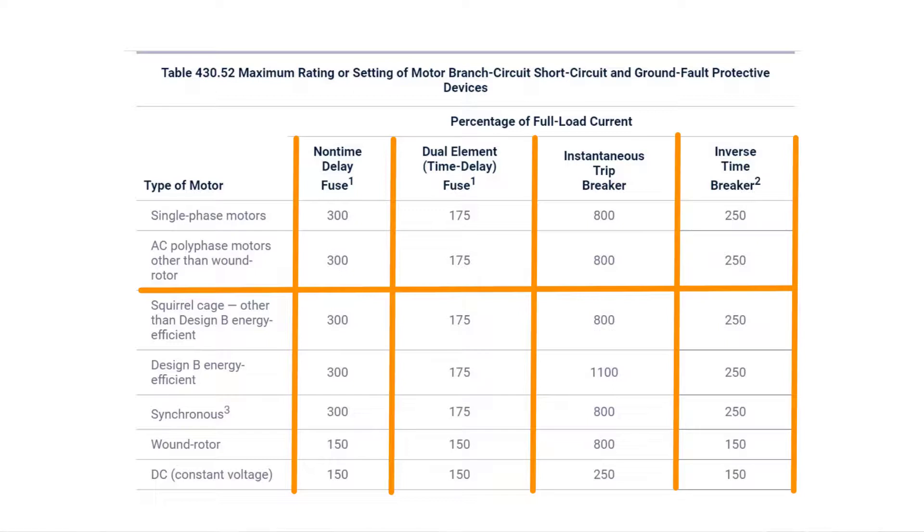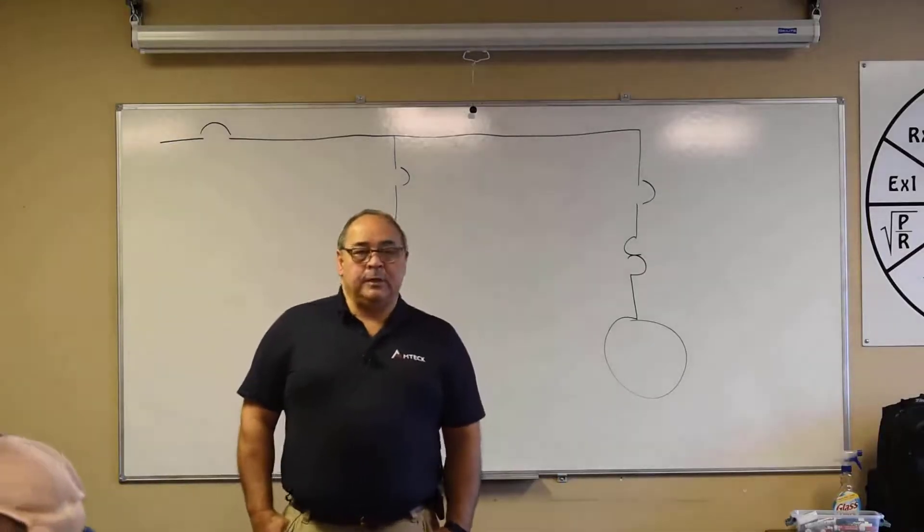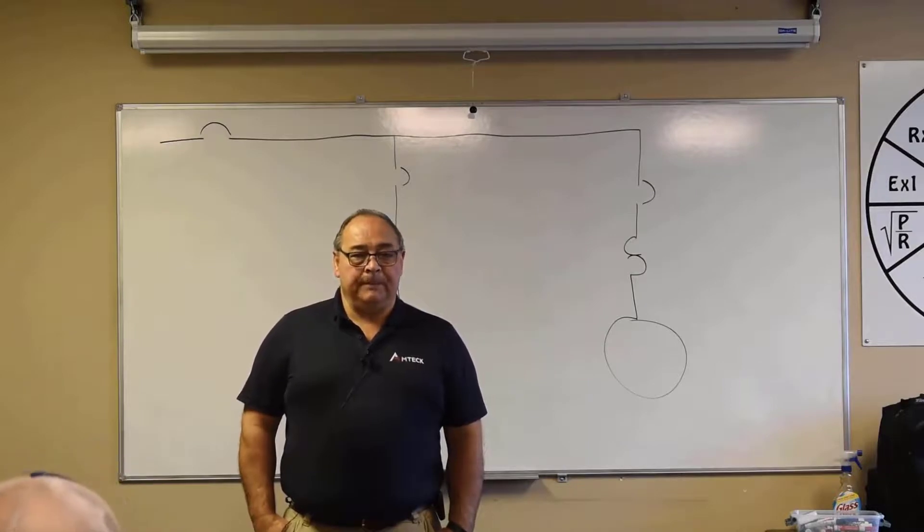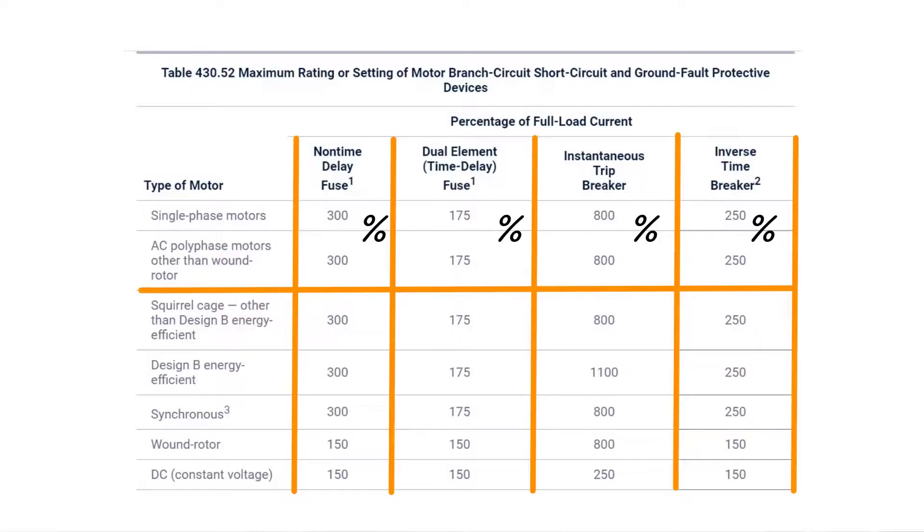Now I do want you to know that these are percentages, and we've got a 300%, we've got a 175%, we've got an 800%, we've got a 250%. Draw a percentage sign beside those, that way you know those are percentages. So on your test question, it will tell you which type of these four different items you're going to be choosing from. It has to, but it won't tell you the amps of the motor. You've got to figure that out by using the table we just looked at.